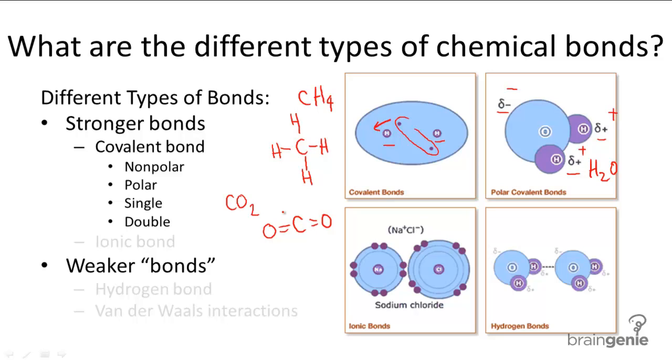There's also triple bonds, which means there's a sharing of three pairs of electrons, or you can think of six electrons being shared between the two atoms. Nitrogen gas is an example of that, N2 looks like this, N triple bond N. Triple bonds are stronger than double bonds and double bonds are stronger than single bonds.